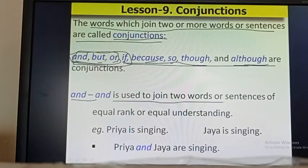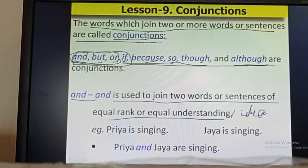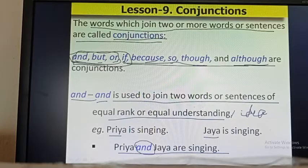And. 'And' is used to join two words or sentences of equal rank, equal understanding, or equal idea. For example: Priya is singing. Jaya is singing. To join these two sentences we use 'and': Priya and Jaya are singing. Because both Priya and Jaya are doing the same action, we use 'and' to join these two sentences.